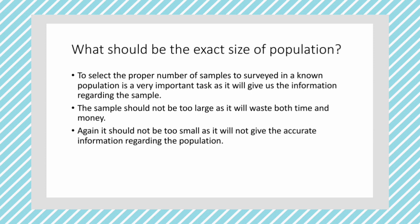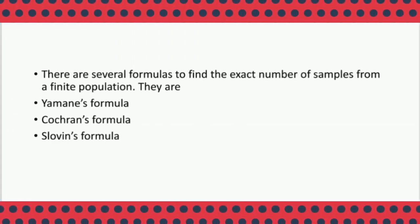We must keep in mind that the sample should not be too large, as it will waste both time and money of the investigator. Also, the sample should not be so small that it cannot give accurate information regarding the population. There are several formulas to find the sample from a finite population: Yamane's formula, Cochran's formula, and Slovin's formula. These three formulas help us find the exact number of samples to be surveyed.